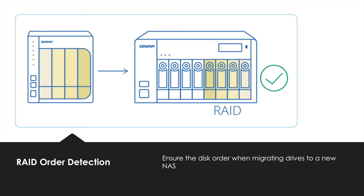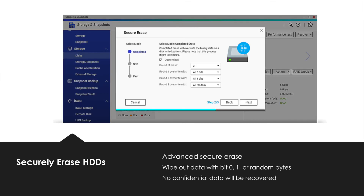The RAID order autodetection mechanism helps ensure the disk order when migrating drives to a new NAS. Even if the drives are not plugged in the same sequence, the RAID order autodetection ensures that the data stored on the RAID can be used on the new NAS, making moving data between NAS systems much easier. There may be times when you need to make sure that you have completely deleted a file so that it can't be recovered. You'll now have the ability to completely erase your hard drives with no trace of the data remaining so that confidential data won't be recoverable in any way.